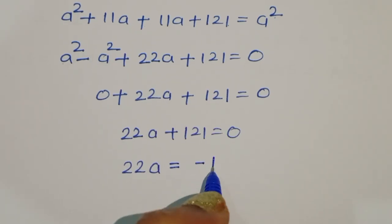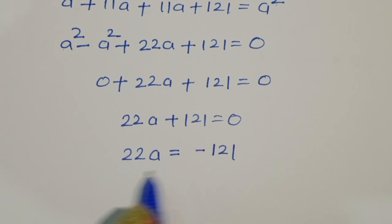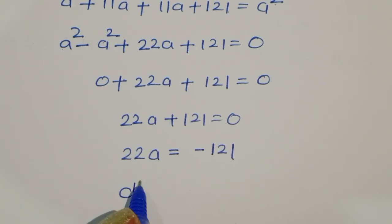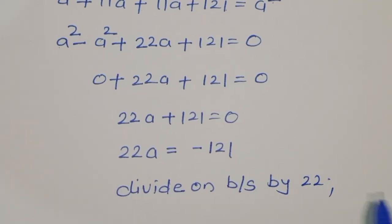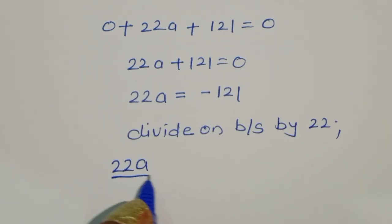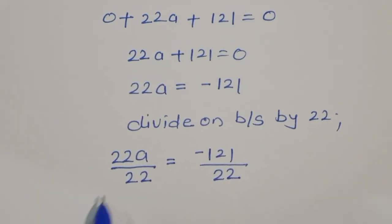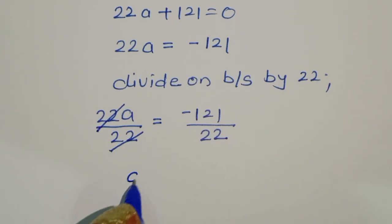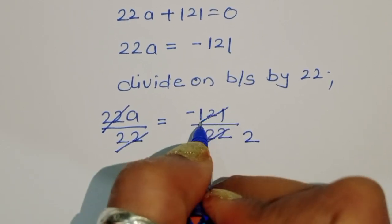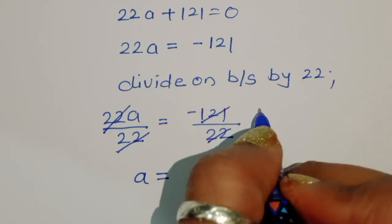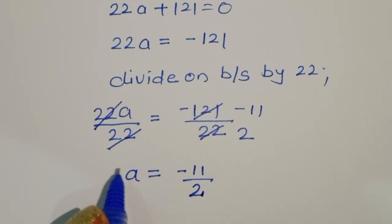So 22a = -121. Dividing both sides by 22: 22a/22 = -121/22. We can simplify by dividing by 11: 121 = 11 times 11, and 22 = 2 times 11, so a = -11/2. This is the value of a.